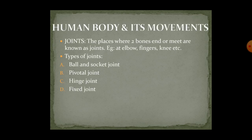The places where two bones meet are known as joints. These joints are usually at the elbow, the fingers, knees, ankles, etc. There are four types of joints: ball and socket joint, pivotal joint, hinge joint, and fixed joint. We will see what these joints are.